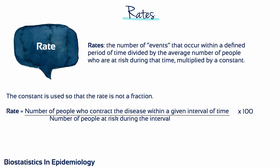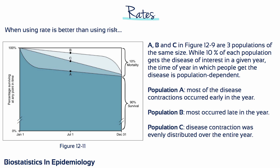Rather than looking at the risk for a disease, we can also look at the rate of a disease. The rate is the number of people who get the disease during a given interval divided by the number at risk during that interval, times a constant. In this figure, the percentage of people surviving at any given time is plotted against time. Over the year, the risk of death was 10% in all three populations, but the rate of death — using the percentage of deaths at that time as the denominator — was highest in population A and lowest in population B. We use confidence intervals to assess whether a risk ratio or odds ratio differs significantly from 1, and in class we will calculate these for specific risk and odds ratios.